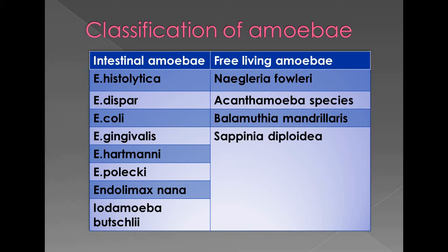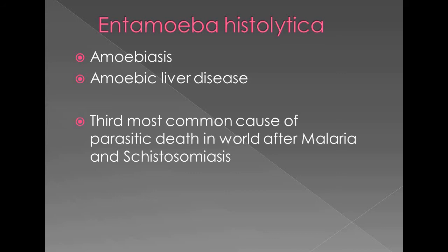Free-living amoeba cause CNS infections. Common ones are Naegleria fowleri, Acanthamoeba species, Balamuthia mandrillaris, and Sappinia diploidea. Entamoeba histolytica causes either intestinal amoebiasis or amoebic liver disease. It is the third most common cause of parasitic death in the world — after malaria and schistosomiasis.